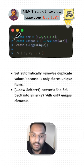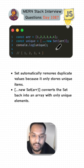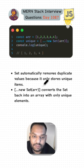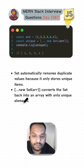Here we have the solution, where we have our array and below that we have some keywords. The 'Set' keyword automatically removes duplicate values because it only stores unique items. Combined with the 'new' keyword, it converts the Set back into an array with only unique elements. That's how the 'new Set' approach works.